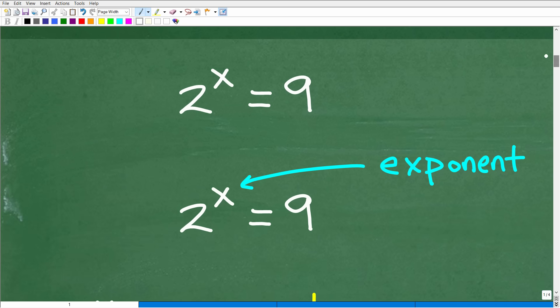Okay, so here is our problem. We have 2 to the x is equal to 9. And if you notice, we're looking to solve for the variable x, right? Well, where is the x located here? Well, the x, or the variable, the unknown value, is in the exponent, right?